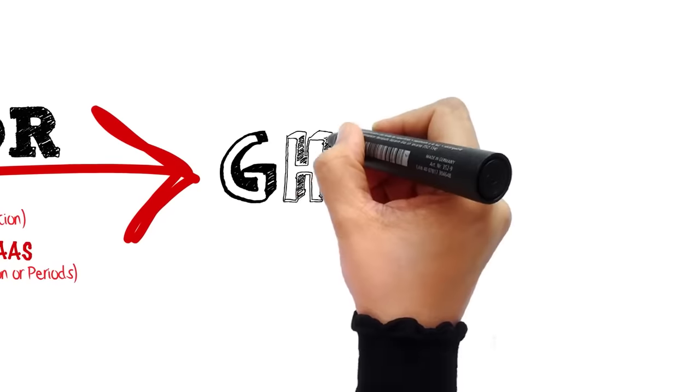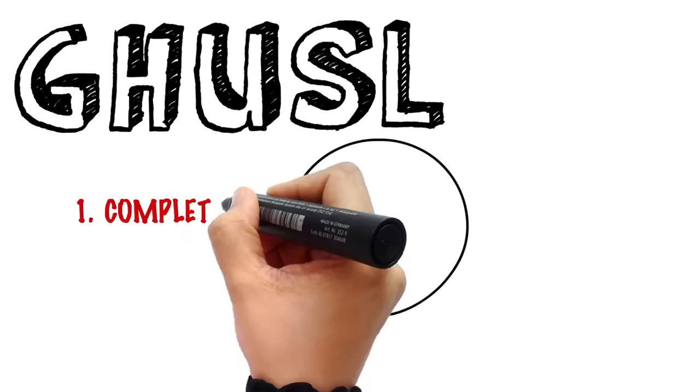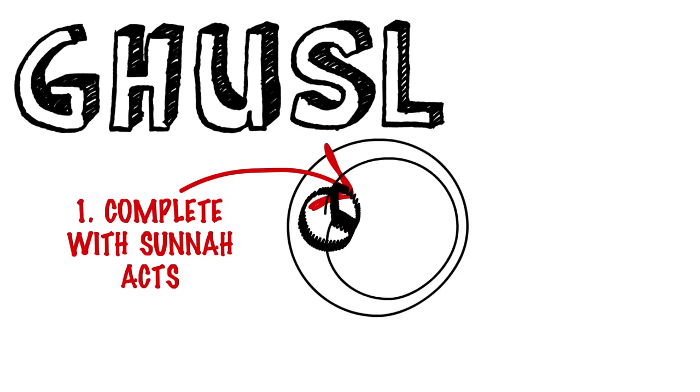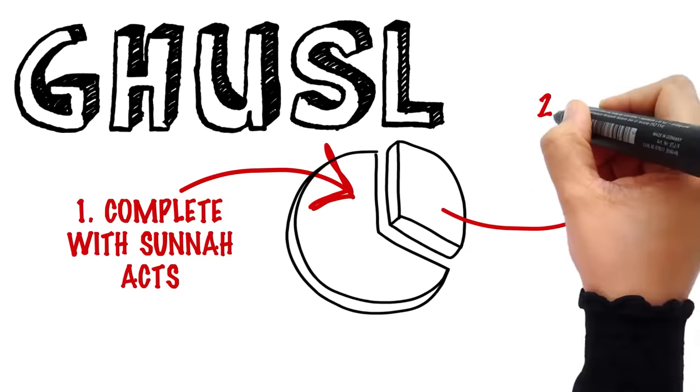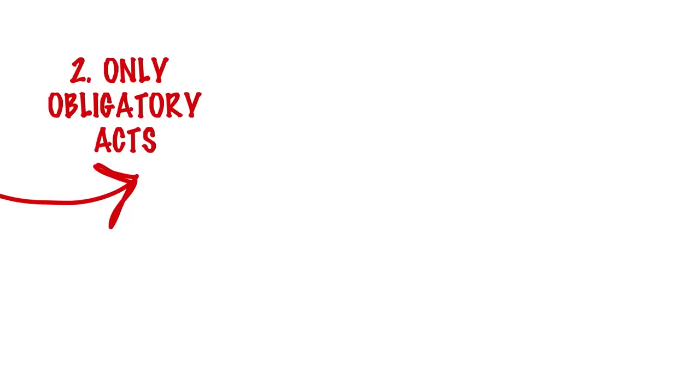Whereas in the case of major impurity, you need to take a Gosil. And Gosil can be taken in two ways: a complete Gosil with all the Sunnahs of the Prophet, and a partial or sufficient Gosil, which means only doing what is obligatory to free yourself from the ritual impurity.